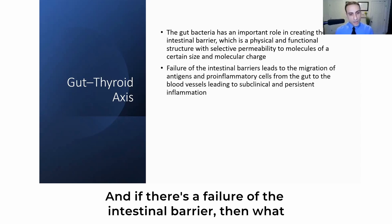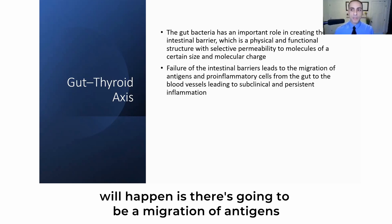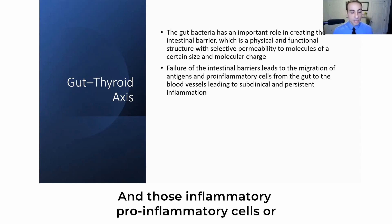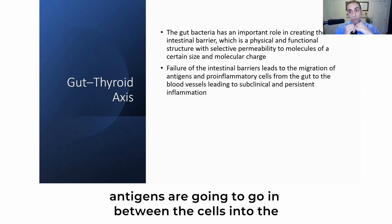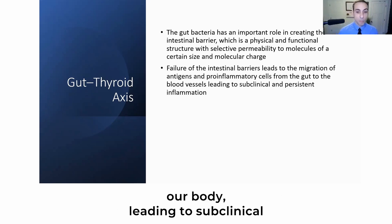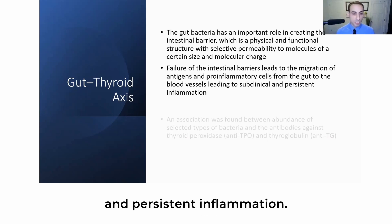If there's a failure of the intestinal barrier, there's going to be a migration of antigens through the tight junctions in between the cells, and those pro-inflammatory cells or antigens are going to go in between the cells into the blood vessels where they'll be distributed in our body, leading to subclinical and persistent inflammation.